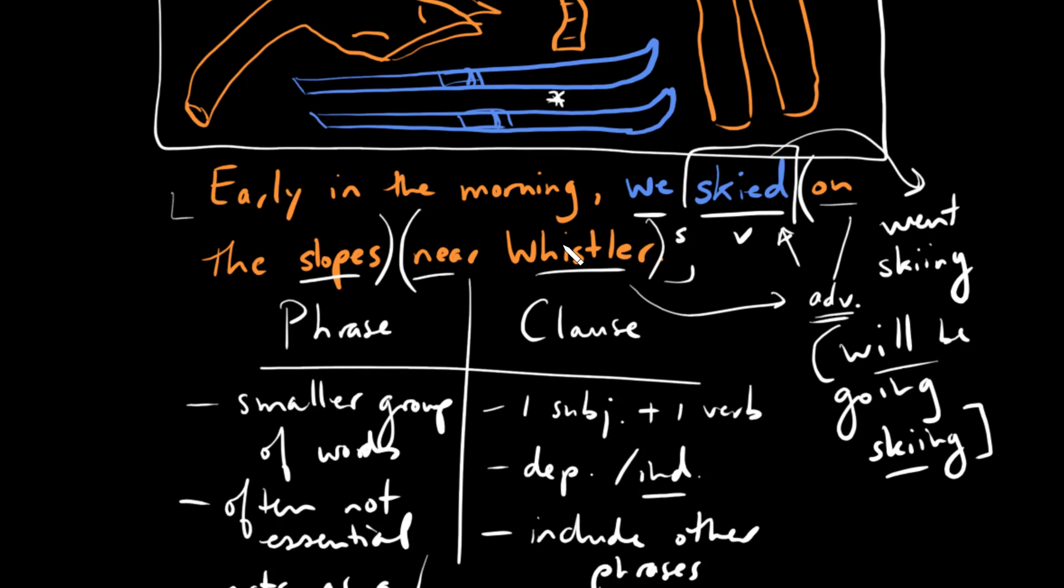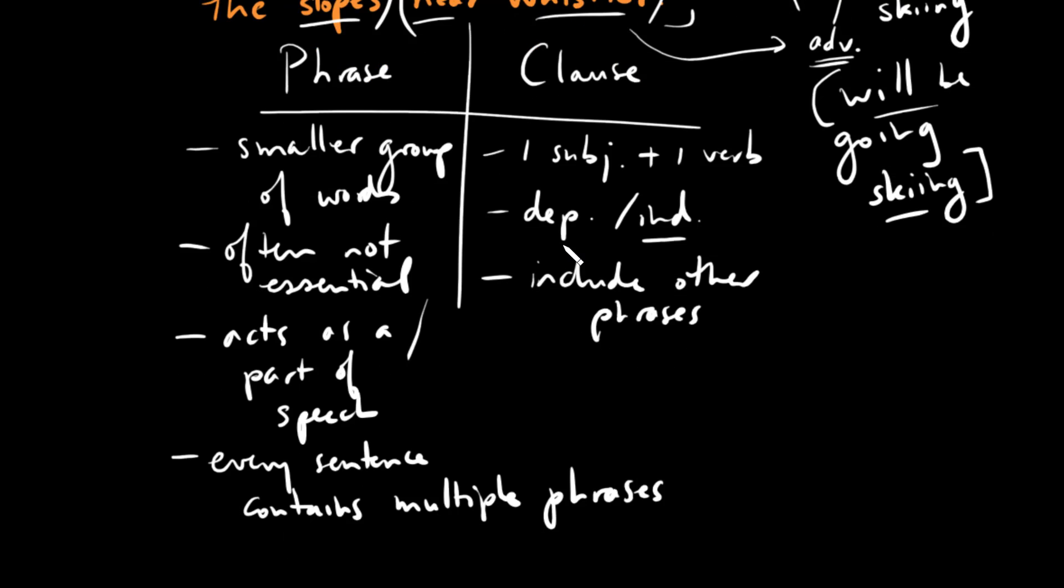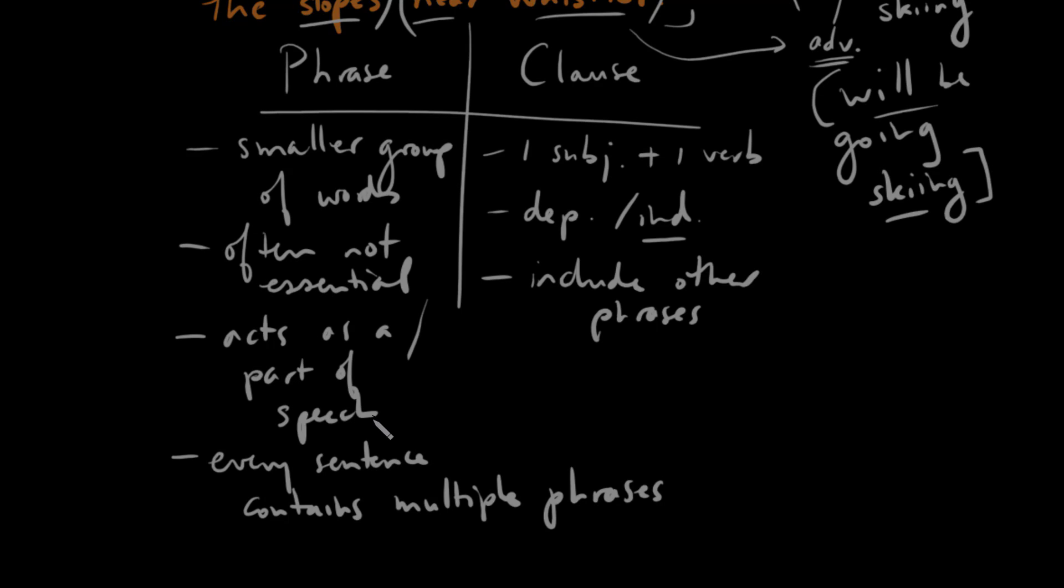Just to recap then very quickly, phrases consist of parts of speech. They're smaller than clauses. They're smaller groups of words. They're often not essential. They act as a part of speech, and it can be hard to tell sometimes which one, but we'll talk about that in a different video some more. And every sentence contains multiple phrases. So in future videos then we'll really talk about all the different types of phrases. But this video is more of a concept video, and hopefully you get the idea.